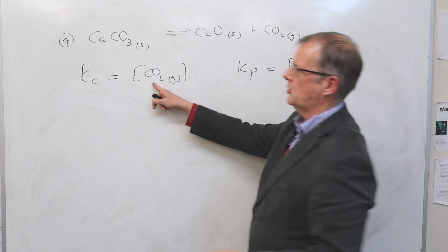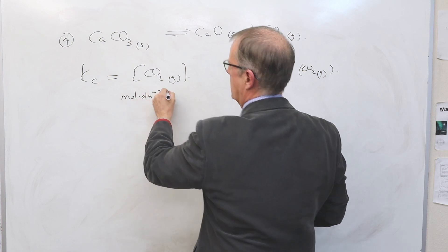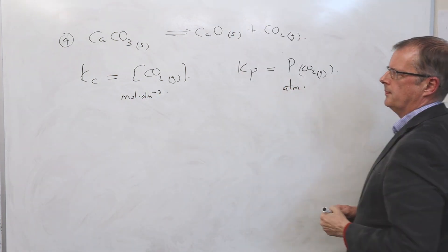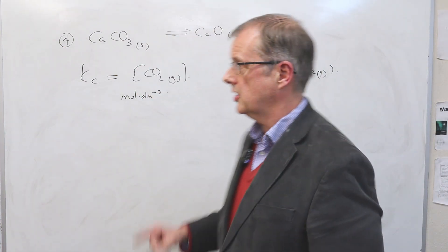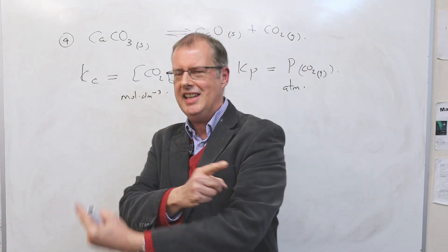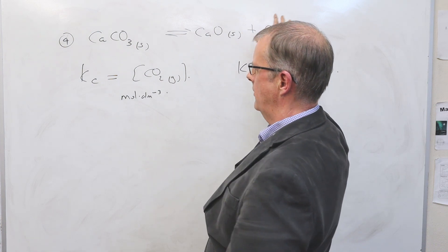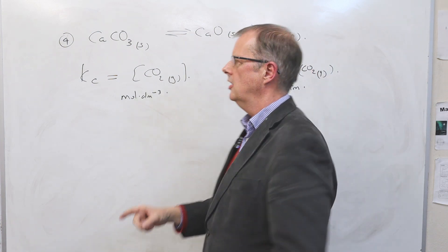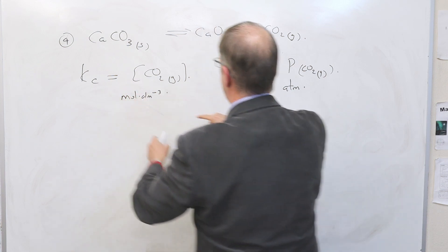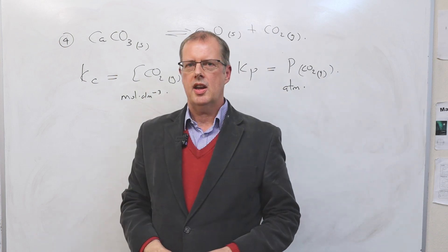For units: Kc has units of moles per decimetre cubed, and Kp has units of atmospheres. You could also write the reaction the other way round — with CO₂ as a reactant and CaCO₃ as a product. If you did that, Kc would be one divided by the concentration of CO₂, and Kp would be one divided by the partial pressure of CO₂.